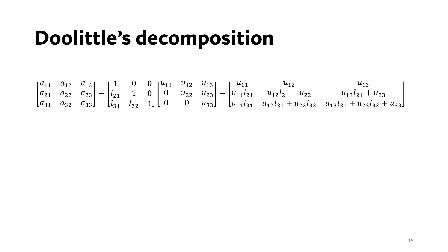Hello and welcome everyone. This video is about Doolittle's LU decomposition, which puts constraint on the lower triangular matrix that all elements on its main diagonal should be equal to 1.